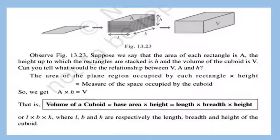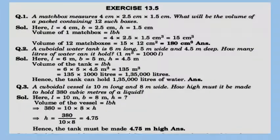The volume of the cuboid is base area into height, and since base area is length into breadth, the formula for the volume of the cuboid is simply V = l × b × h, where l, b, and h are respectively the length, breadth, and height of the cuboid.